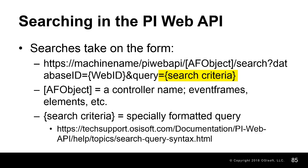The search criteria is available to be viewed on the help file documentation. This may seem overwhelming at first and will take some time to get familiar with the range of search options available to you, though searching in the PI Web API holds a lot of power once the syntax is grasped.